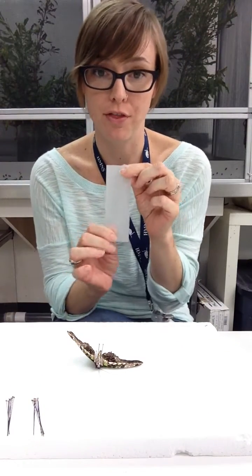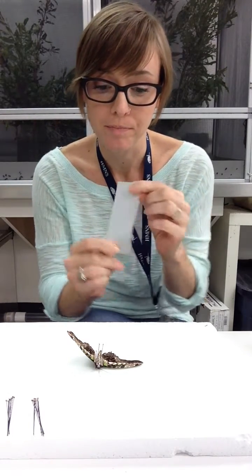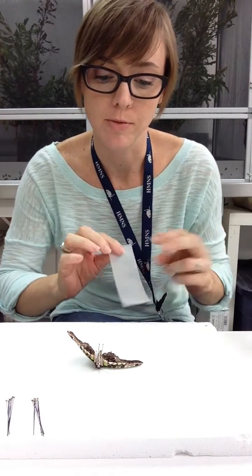The next thing I need to do is take my thin strips of tracing paper, one of them, and I'm going to do this one side at a time. I'm going to work with this side of the butterfly and place the strip of paper over both of the butterfly's wings.